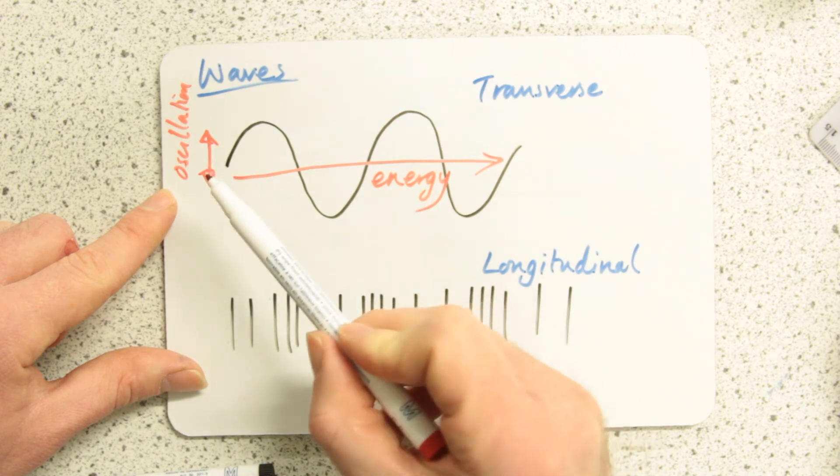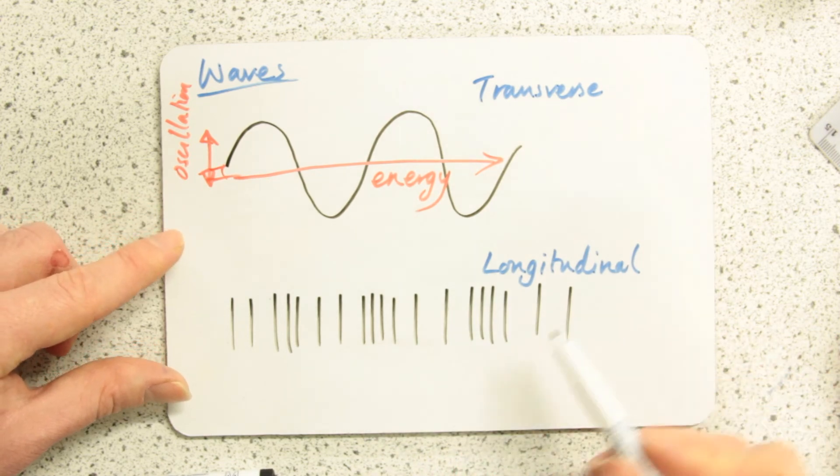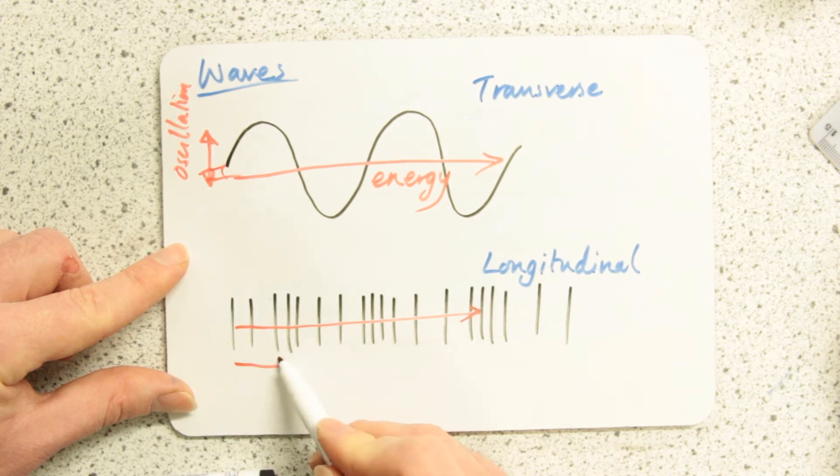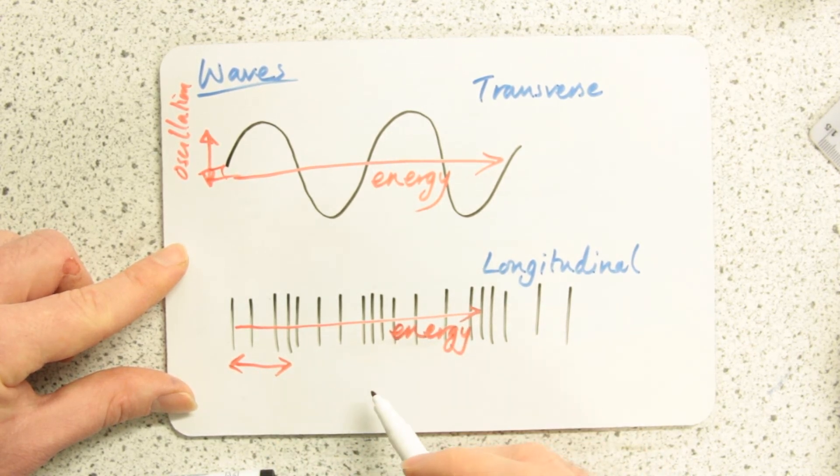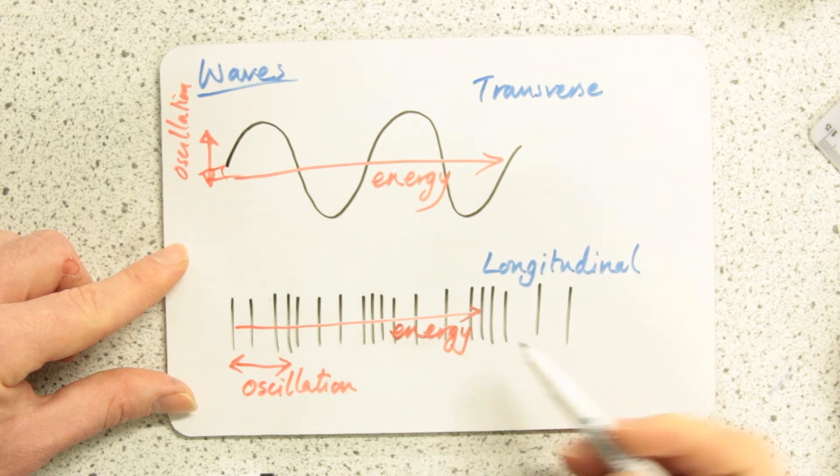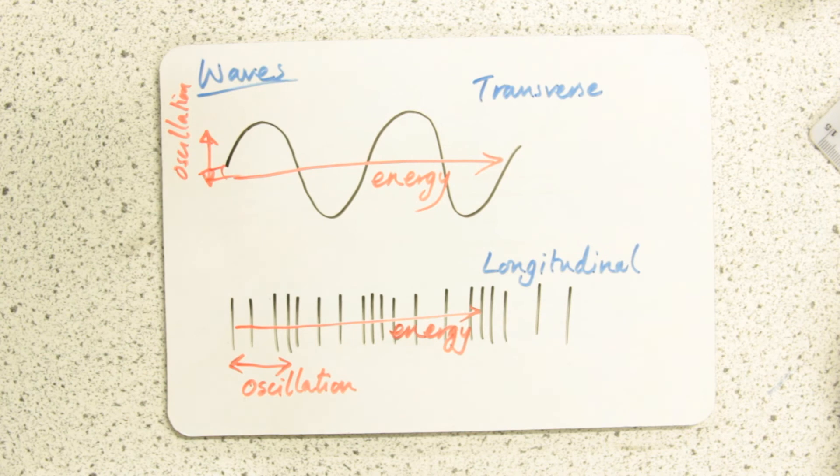Now in the longitudinal wave the energy is still moving in this diagram from left to right but the oscillation is also moving in that same direction. So once more, we don't describe it as a side to side wave or anything like that. It needs to be absolutely clear the oscillation is in the same direction as the energy transfer. We would say the oscillation is parallel to the energy transfer. So use those two words.